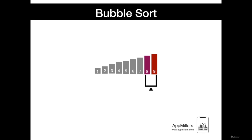Then we continue to the right. We compare 8 with 9 and see that 9 is greater than 8, which means 8 is fully sorted. And then we check 9, and 9 is also fully sorted.